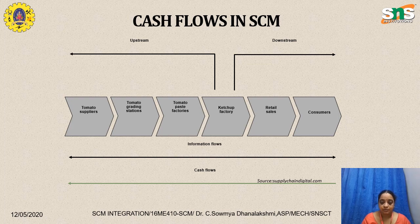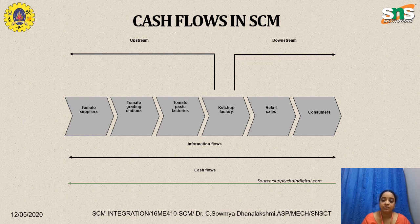Regarding cash flows, they happen only from consumer to supplier. Once the quality of the product is good, the consumer will be satisfied and cash flows will go from consumer back to the supplier. Upstream is defined as from the supplier to the factory, and downstream is from the factory to the customer. This is the process of cash flows in any supply chain management.